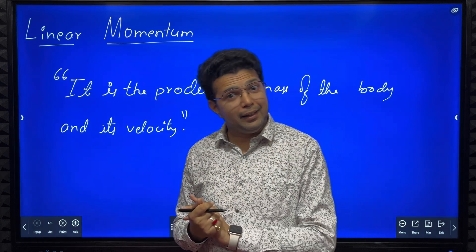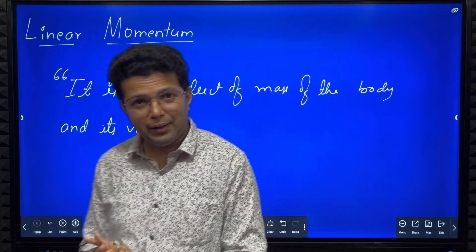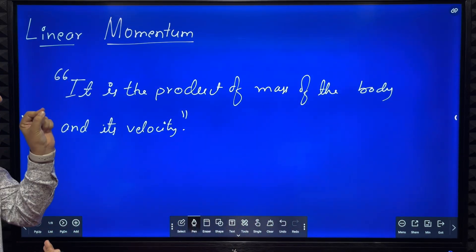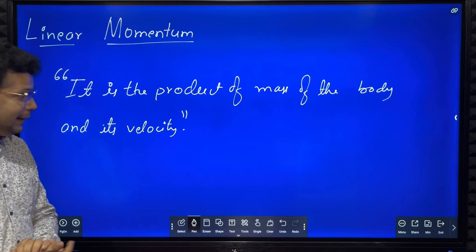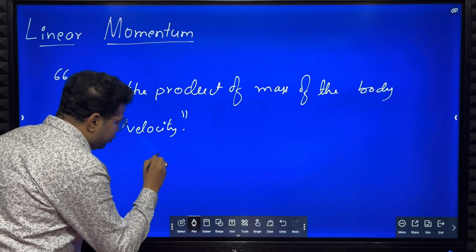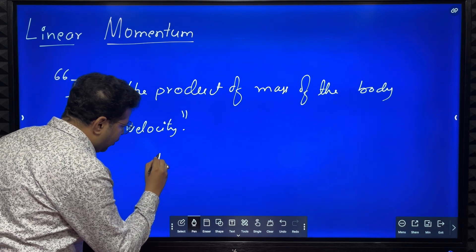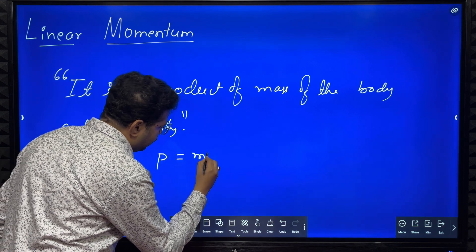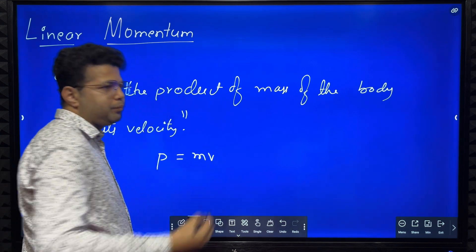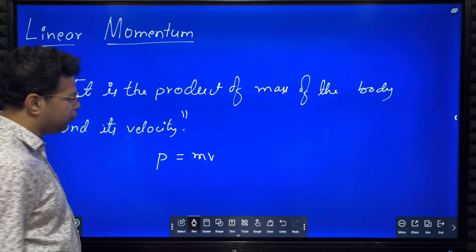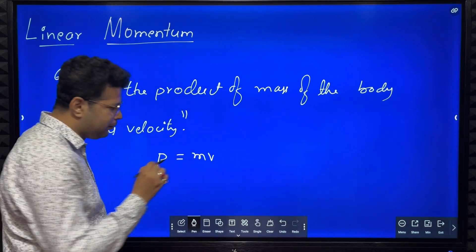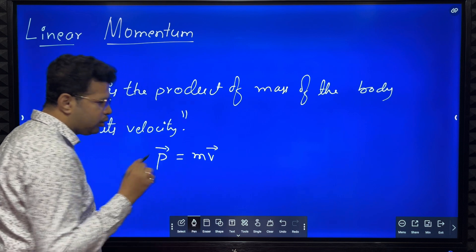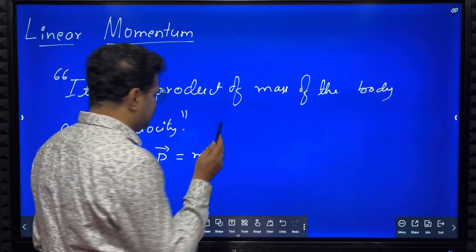The first thing is linear momentum. It is the product of mass of the body and its velocity. Linear momentum p is equal to m into v. Mass is a scalar, velocity is a vector, therefore linear momentum is also a vector.